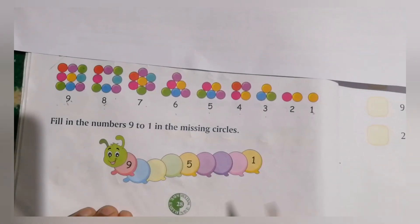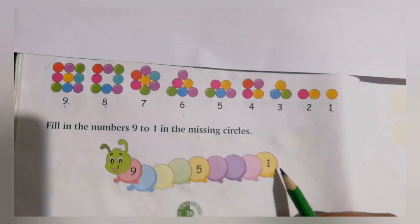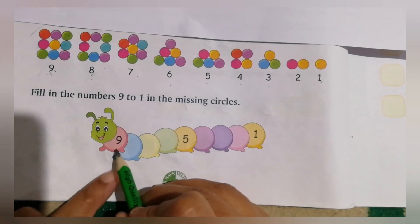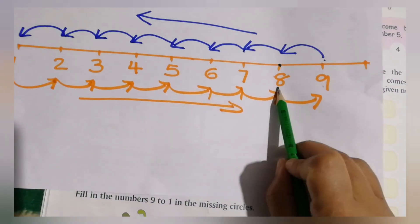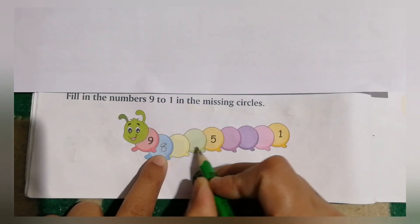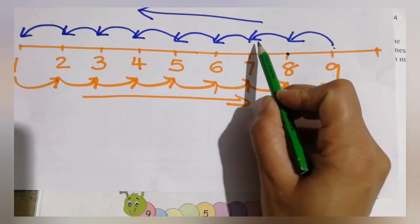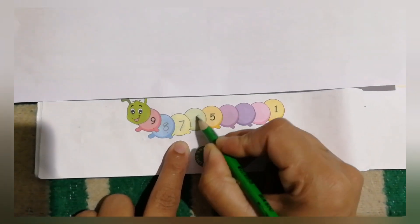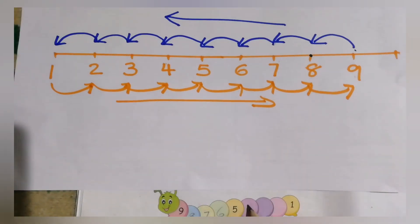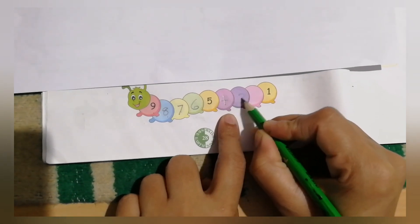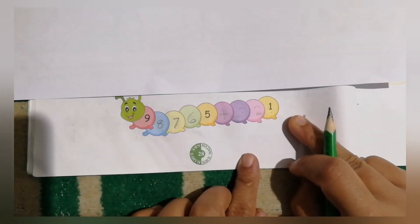They have given a picture of a worm again and we have to complete its body parts using the backward counting method. First number given is nine. Counting backward: nine, then eight — write eight. Then seven, then six. From five to four, write four. Then three, then two. The last number given is one. Completing this way is the backward method.